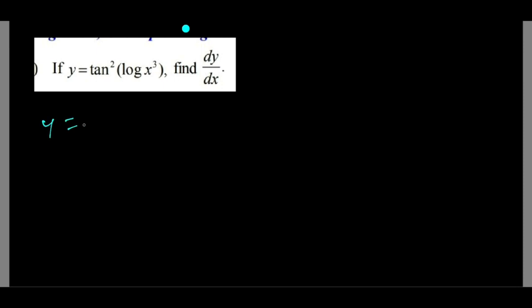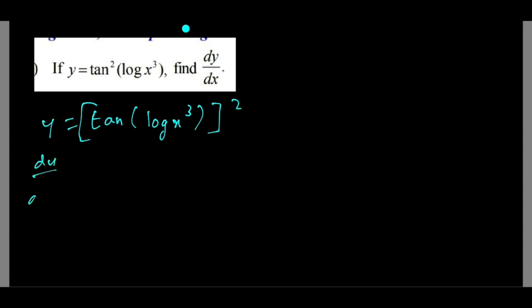This is question 4b, 2nd, question 1, for 2 marks. y is equal to tan of log x cubed, whole square. We just need to modify it and differentiate it, so dy by dx will come.